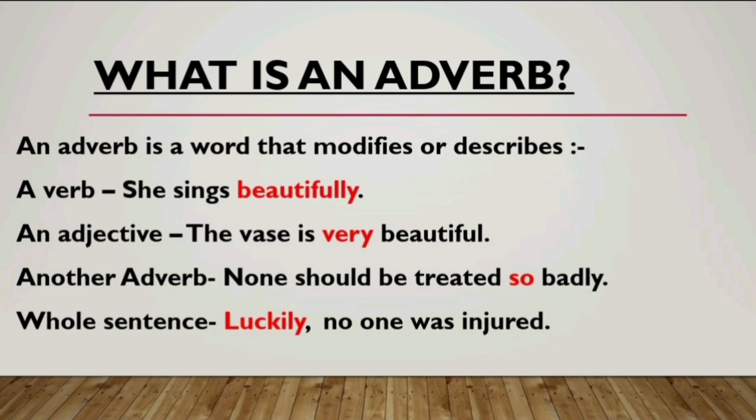What is an adverb? An adverb is a word that modifies or describes. Modification means it adds something to the meaning of something. It modifies or describes: number one, a verb. An adverb modifies a verb, an adjective, or another adverb. For example, it modifies a verb: 'She sings beautifully.' Here, some more information is added about the verb 'sings' — how does she sing? Beautifully. So 'beautifully' is an adverb.